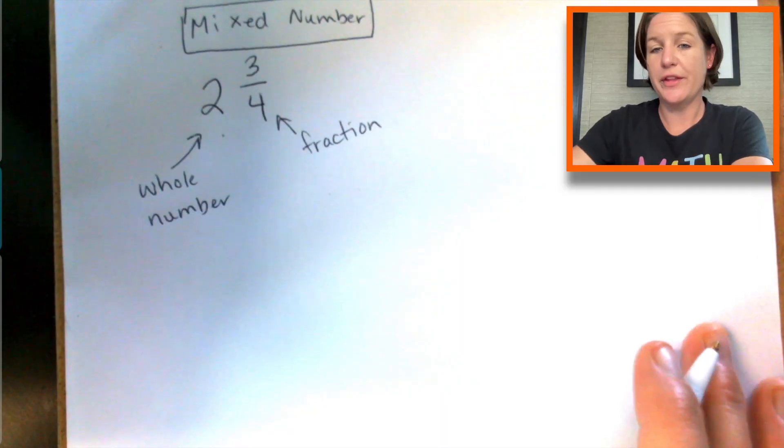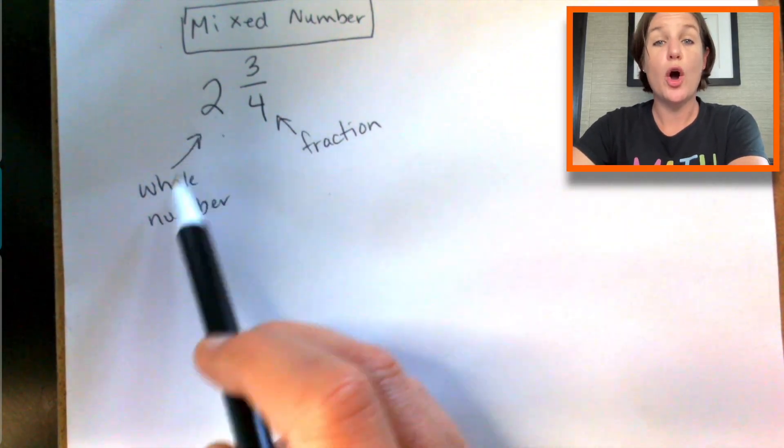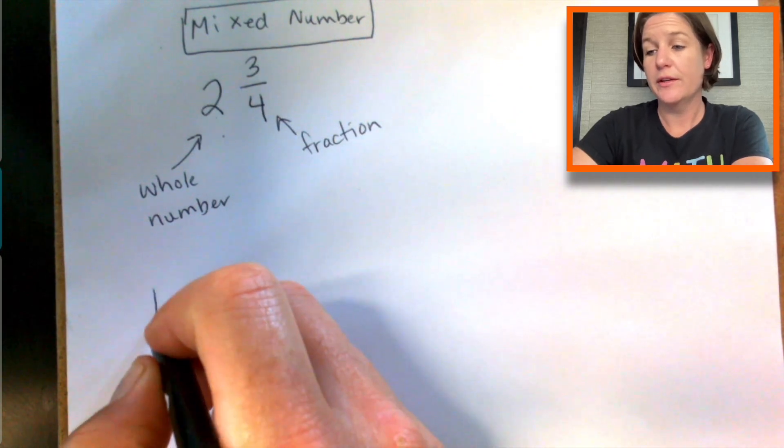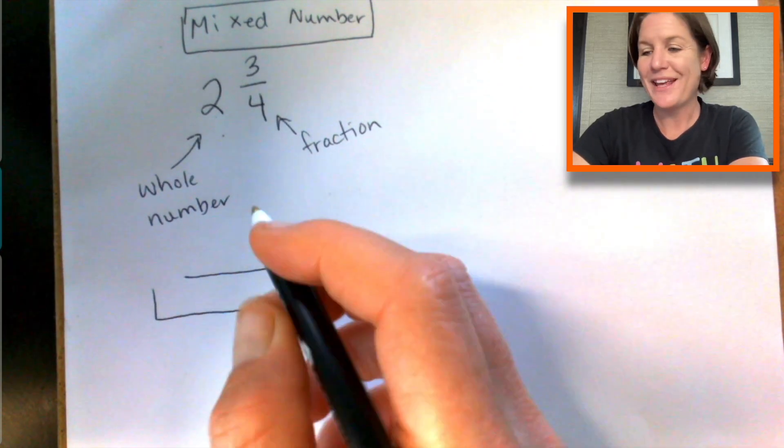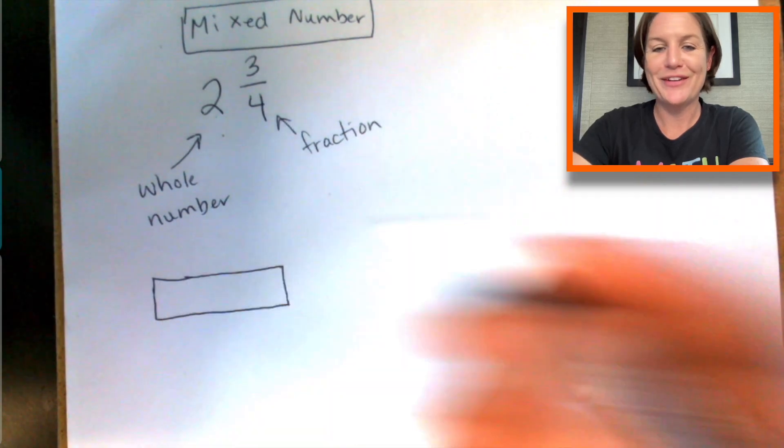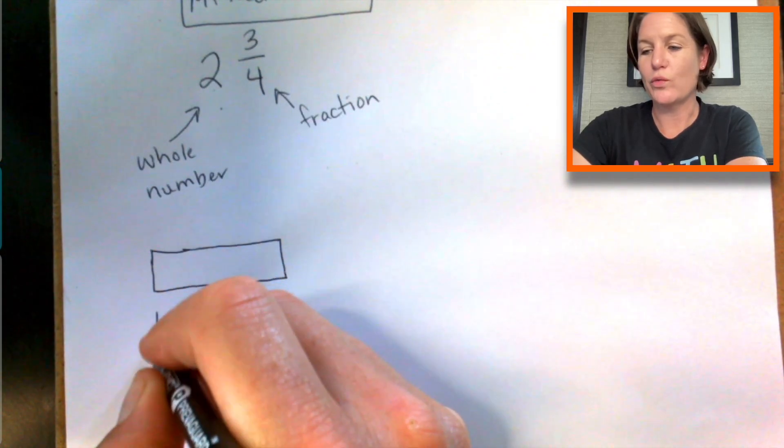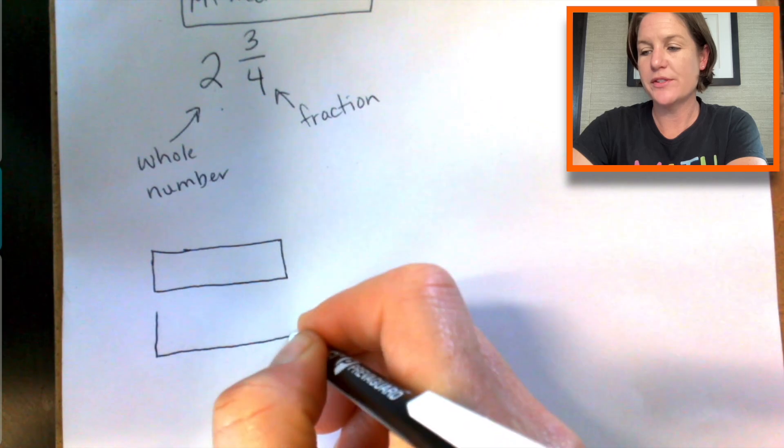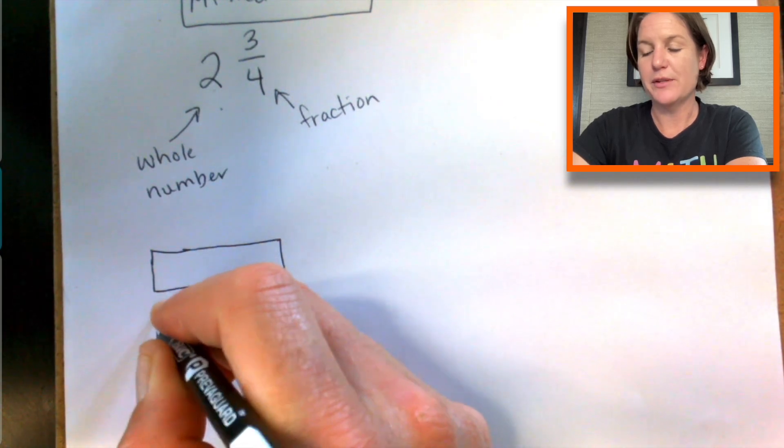Now, if we were to model this, we would draw two wholes. In the last episode I told you that I like to model using rectangles, and it helps, especially when we start comparing.